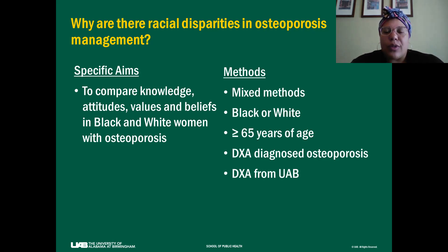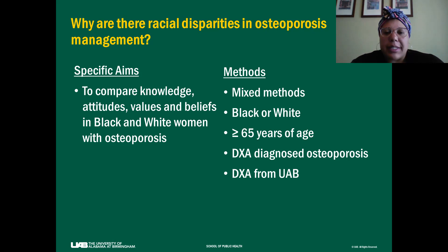We designed a mixed method study in Black and White women who were older than 65 years of age. We specifically recruited women who had DEXA-diagnosed osteoporosis, meaning they had a T-score of less than minus 2.5 at the hip or the spine, and that DEXA was from UAB.